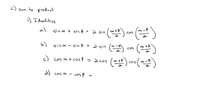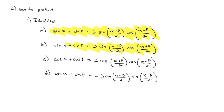And for cosine alpha minus cosine beta, that equals negative 2 times the sine of the sum over 2 times the sine of the difference over 2. So the last set of properties takes a sum or a difference to a product. Let's do one example where we can use those as well.